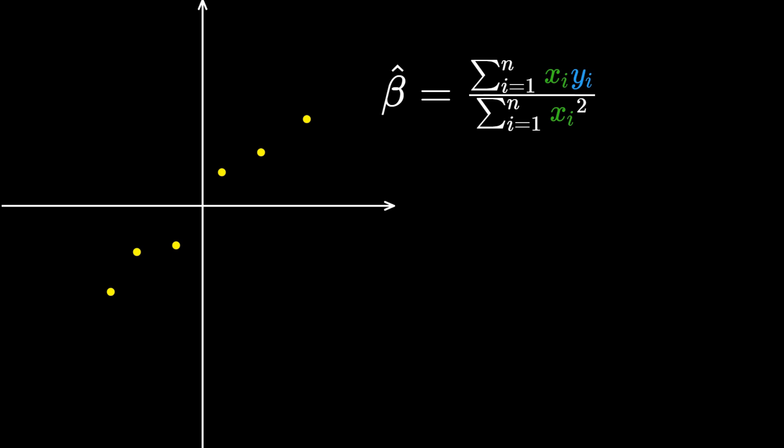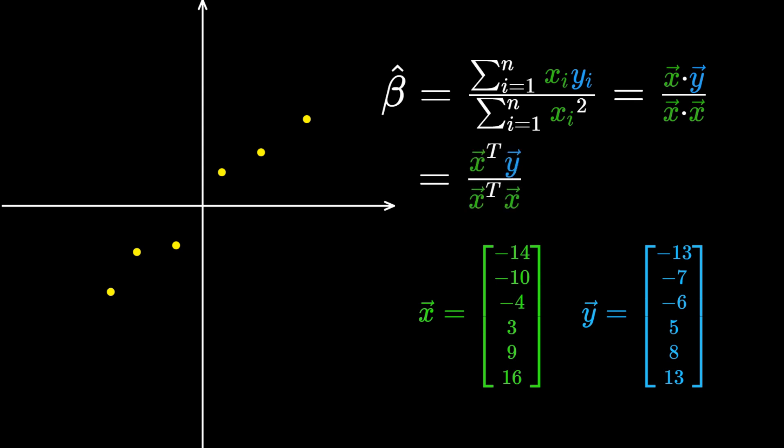This looks suspiciously familiar, doesn't it? If we put all of the x's and y's into vectors, these sums are just like taking dot products. In fact, rewriting the equation, we see that this is the normal equation in its one-dimensional form.